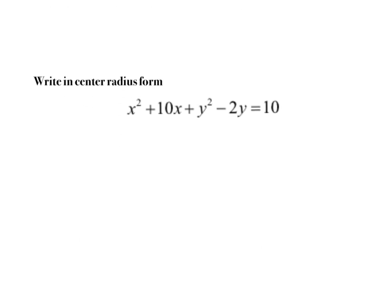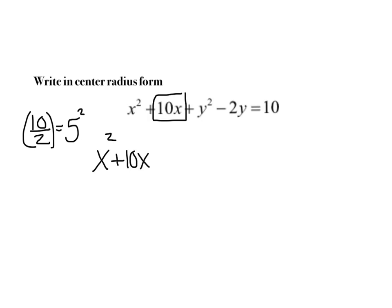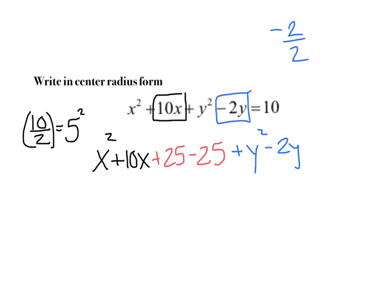Next question: write in center-radius form. We basically complete the square twice — we just reviewed that last week. Take the middle term with x, divide by 2 to get 5, then square it. Add and subtract 25: x squared plus 10x, plus 25 and minus 25. Now do the same for the y's: plus y squared minus 2y. Take negative 2 divided by 2 to get negative 1, square it to get positive 1, so add 1 and subtract 1. All of that equals 10.